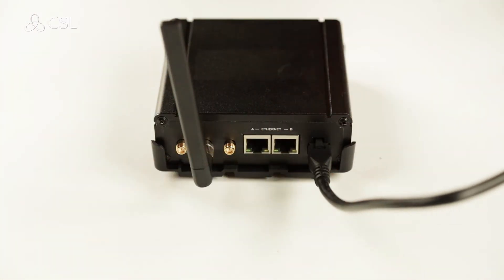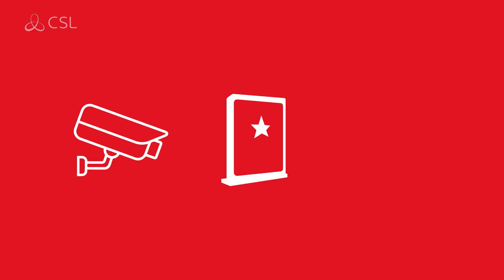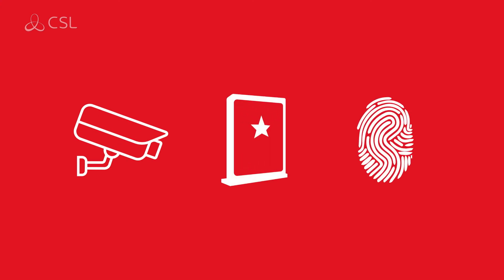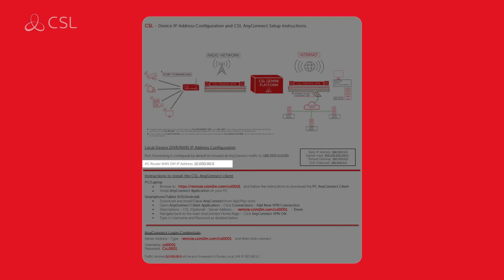You will not need to connect the antenna provided if you are only using wired broadband. This section is relevant if you are enabling 4G connectivity to the LAN via an Ethernet cable to your device, such as CCTV, electronic article surveillance, or access control via port A or port B of the CSL router. Program your device with the IP details provided with the CSL router.